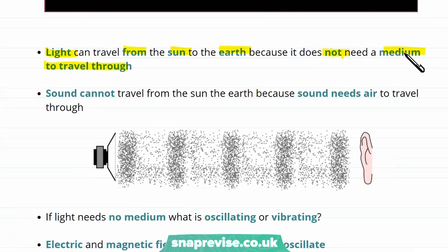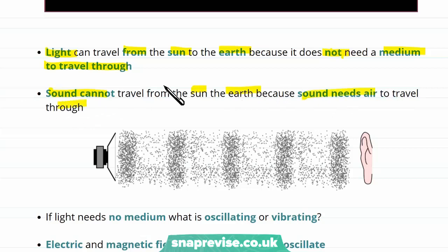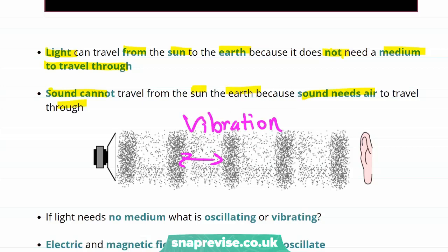For an example of a wave that can't do this: sound cannot travel from the Sun to the Earth, because sound needs air to travel through. Remember that sound is a vibration of particles, and so without any particles to vibrate, the sound wave can't travel.